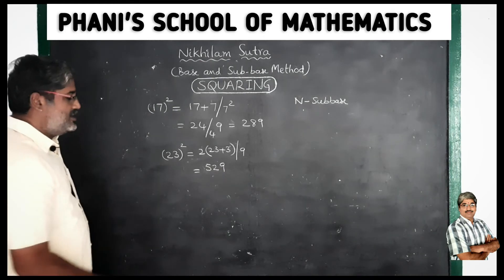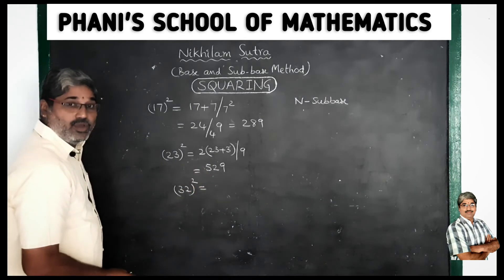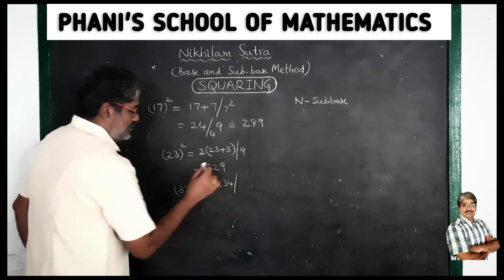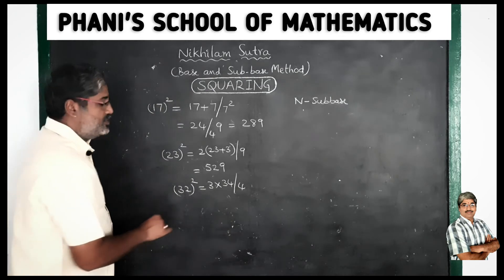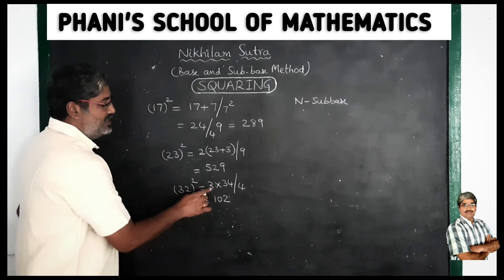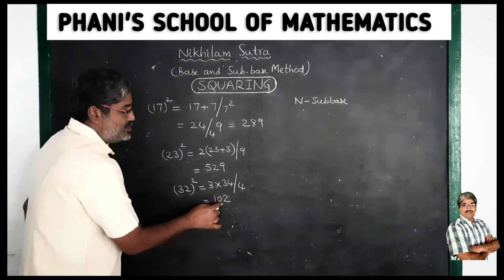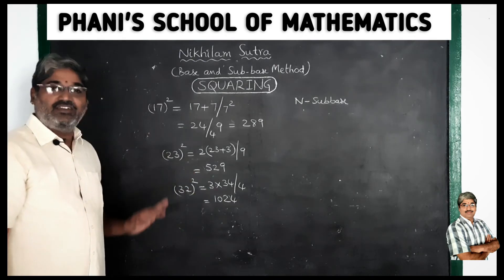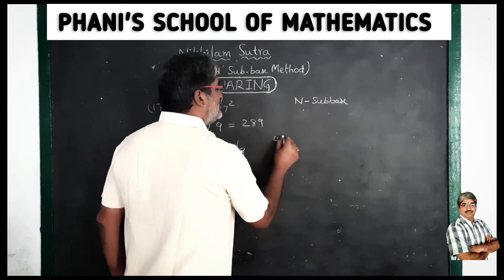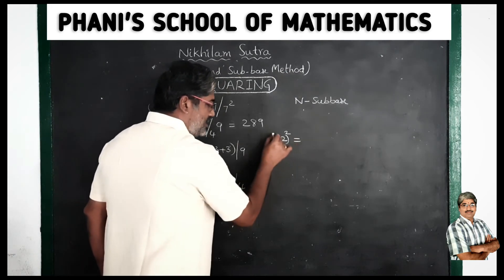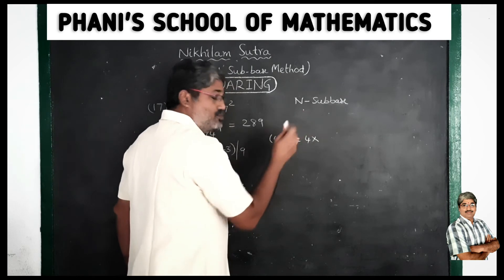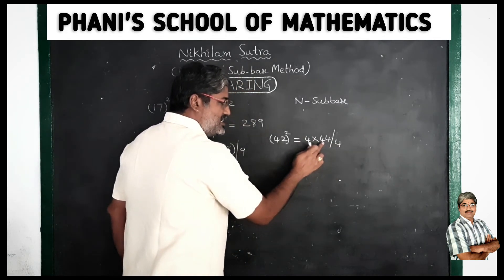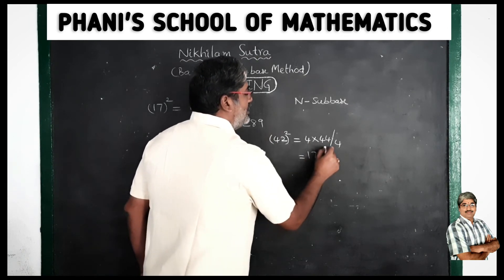Suppose 32 square. Okay, 3 sub-base digit, 3 times 32 plus 2, 34. 2 square is 4. 3 times 34 is 102. It is 3, 30 is 90, 3 times 4 is 12, so 102 and 4, 1024. So 32 square is 1024. Okay, 45 square or 42 square is equal to, 4 digit, so 4 times 42 plus 2, okay 44. 2 square is 4. 4 times 44, 4 times 40 is 160, 4 times 4 is 16 and 176, 4. How easy it is.